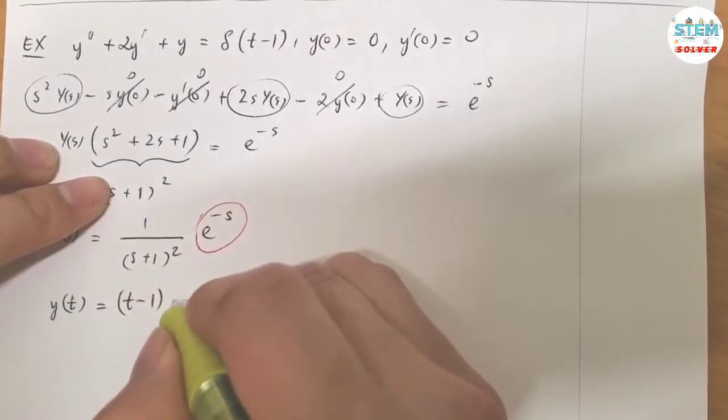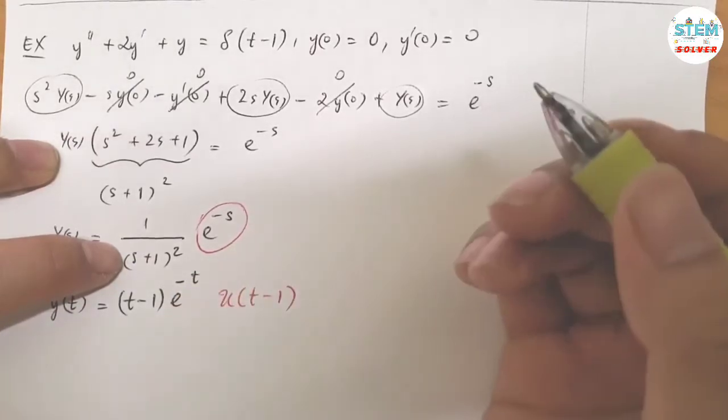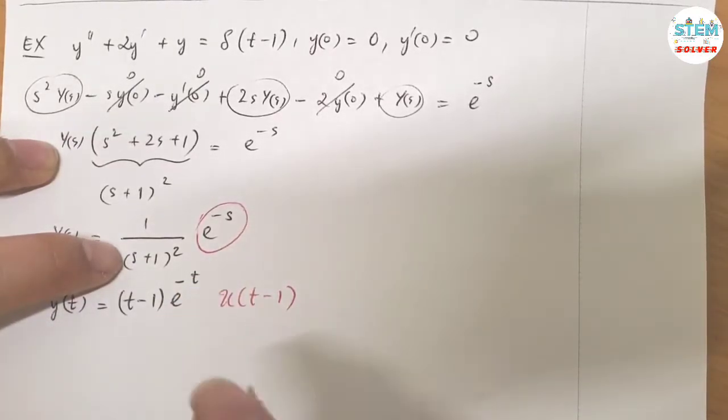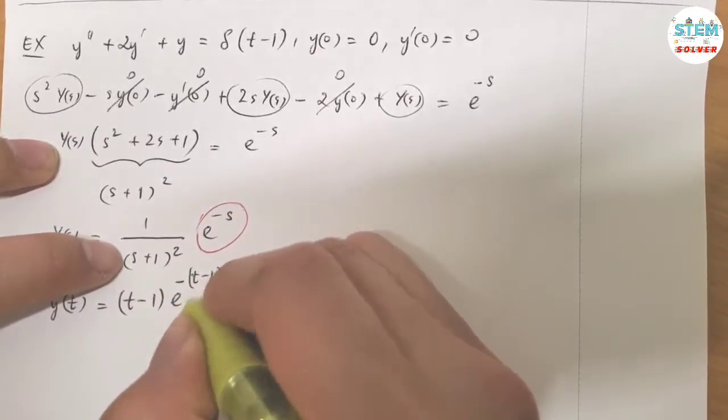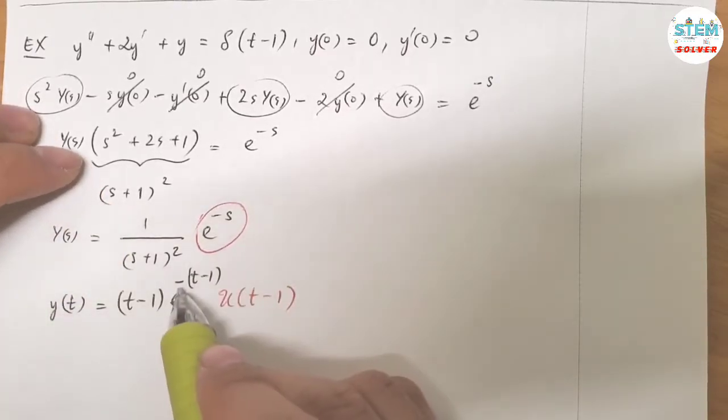So this shift means that you need to have E to the negative T, and again, the T has to match up, which means that you need to have T minus 1. Don't forget to put the parentheses around this one because the negative one applies to everything, not just the T. So if you just put the negative sign for T and subtract 1, that means you have negative T minus 1, but actually it's negative T plus 1.